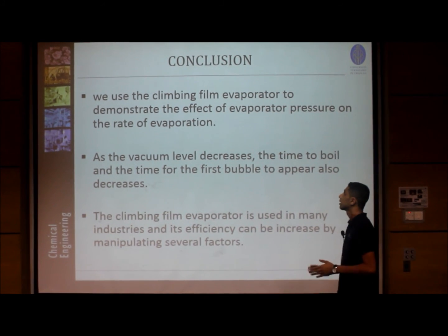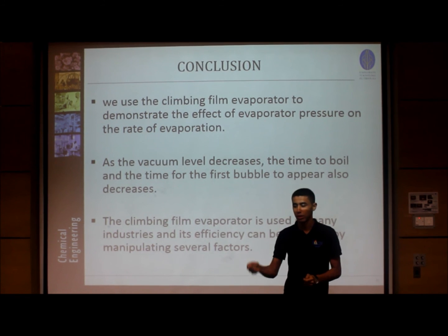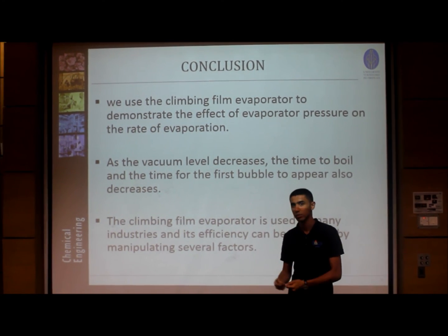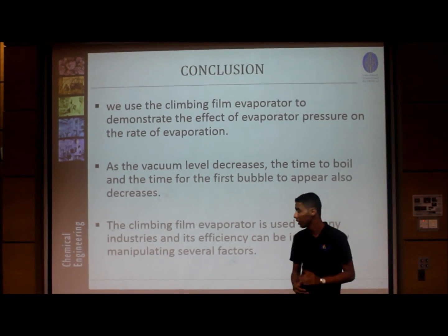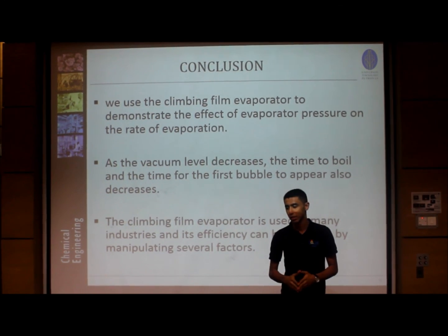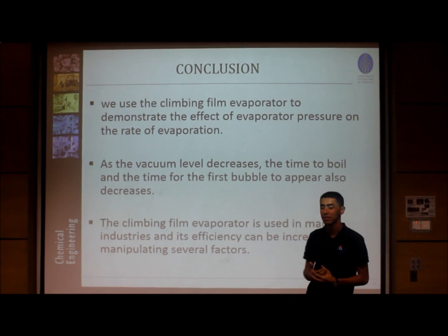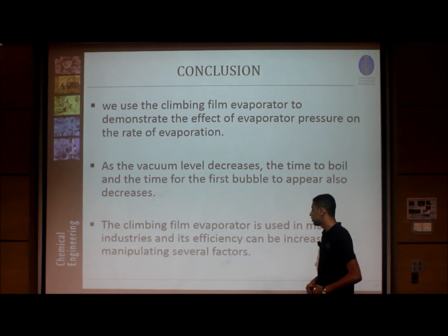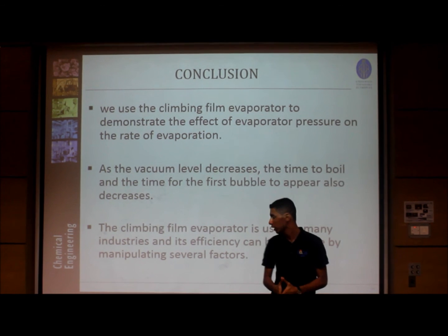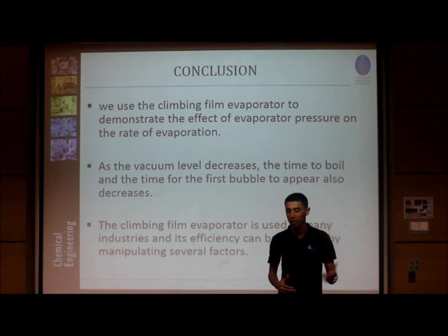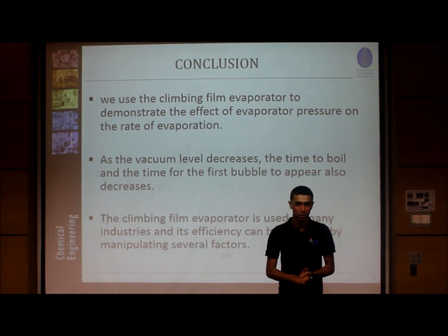In conclusion, we used the climbing film evaporator to demonstrate the effect of evaporator pressure on the rate of evaporation. As the vacuum level decreases, the time for the first bubble and the boiling point also decrease, because reduced pressure makes it easier for molecules to escape the fluid. The climbing film evaporator is used in many industries such as juice production, and its efficiency can be increased by manipulating different operating factors.